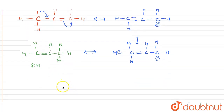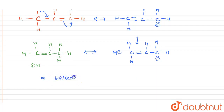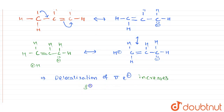From this, we can conclude that the delocalization of pi electrons increases the stability of molecules. More the number of hyperconjugating structures, better the stability. So, delocalization of pi electrons increases the stability of the propene system.